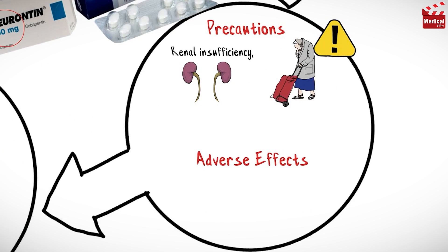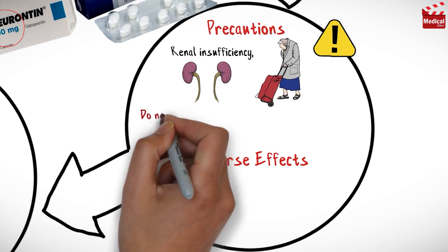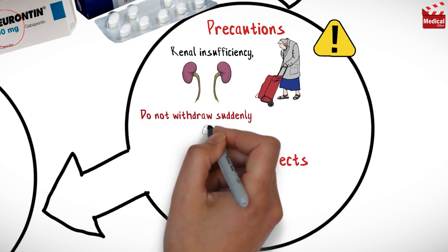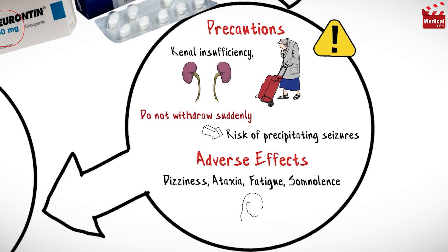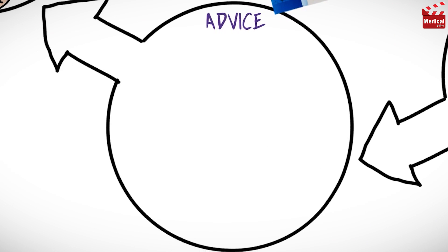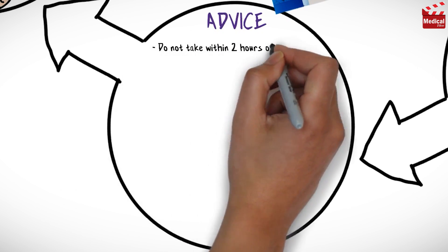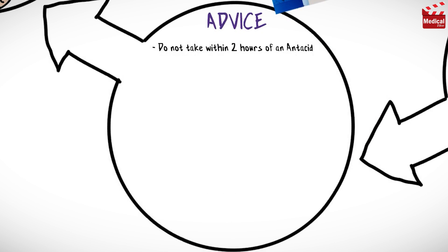Use with caution in patients with renal insufficiency and in the elderly, and do not withdraw gabapentin suddenly because there is a risk of precipitating seizures. Common side effects of gabapentin include dizziness, ataxia, fatigue, and somnolence. Do not take gabapentin within two hours of an antacid.